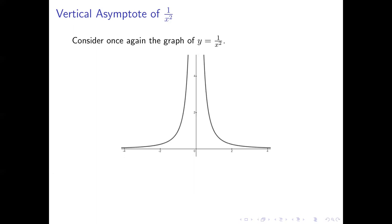Let's take another look at the vertical asymptote of the 1 over x squared function. Notice that as we approach 0 from the left — working from left to right starting on the left side of the y-axis — the graph is moving further and further up the coordinate plane. As we get closer to x equals 0, our y coordinates get bigger and bigger in the positive direction. That limit is infinite, which alone establishes x equals 0 as a vertical asymptote. It's also the case that as we approach 0 from the right, the function values approach positive infinity, so two conditions are met at once.